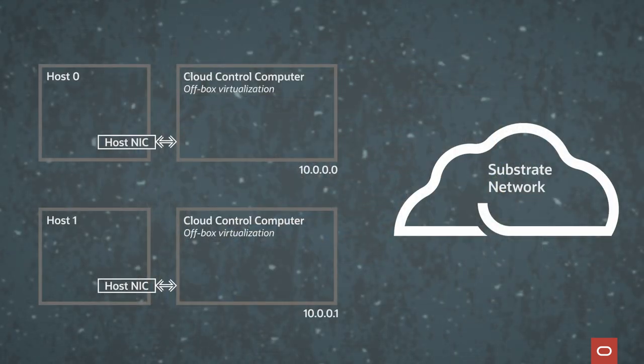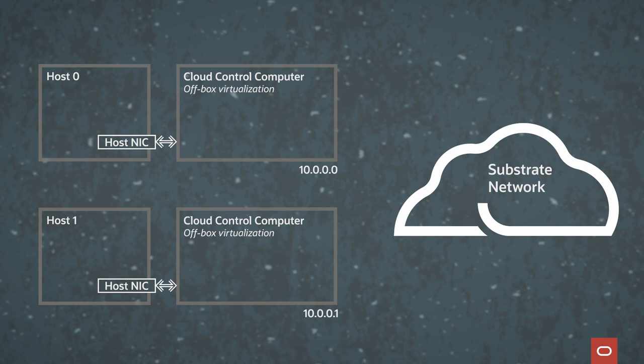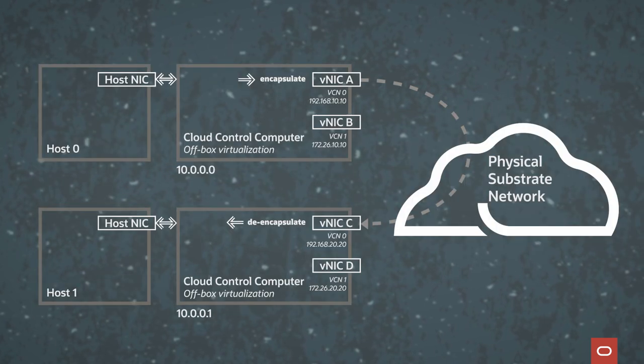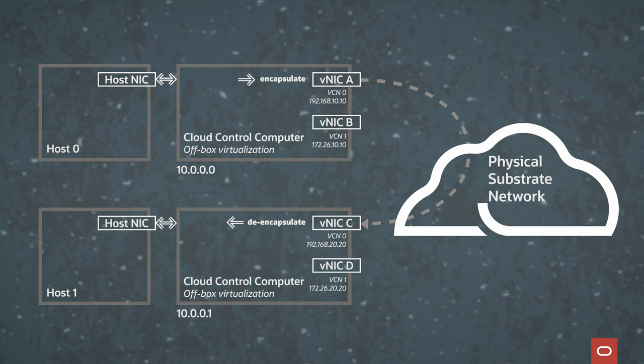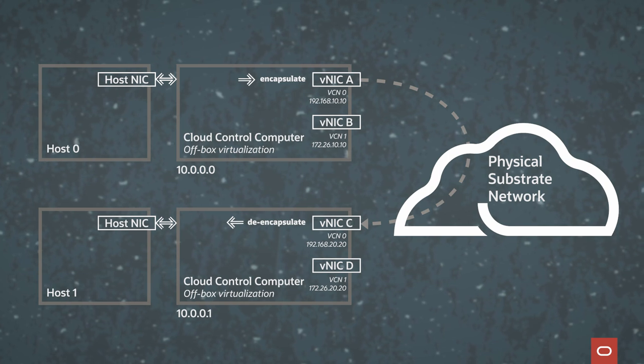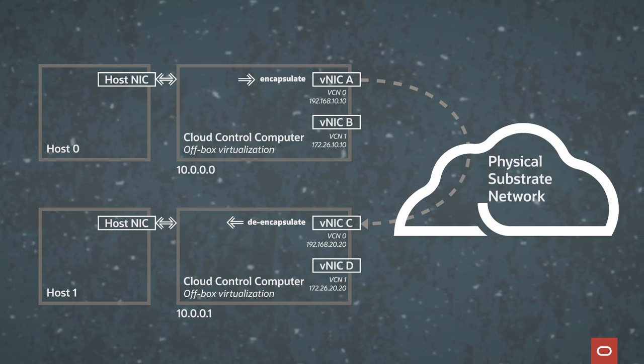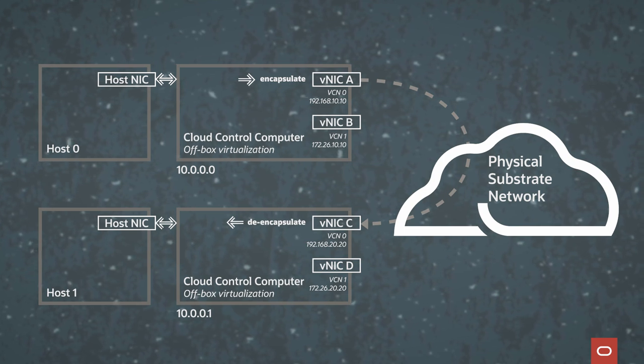That means the control plane knows every location of every VM in the network, every location of every virtual interface, and every location of every IP address on those interfaces. This allows us to layer multiple customer networks on top of that physical network. Referring back to the diagram, if we have host zero with an off-box virtualization device address of 10.0.0.0 and host one at 10.0.0.1, we're able to layer on top of that multiple customer interfaces.